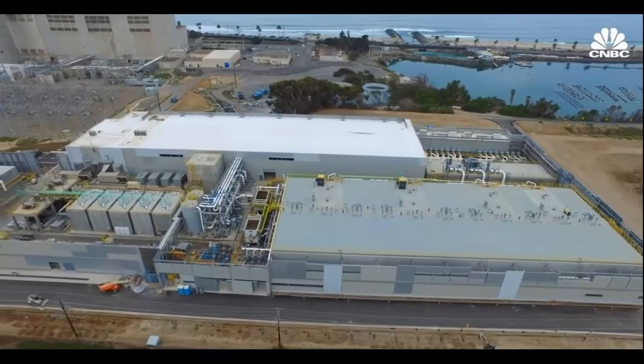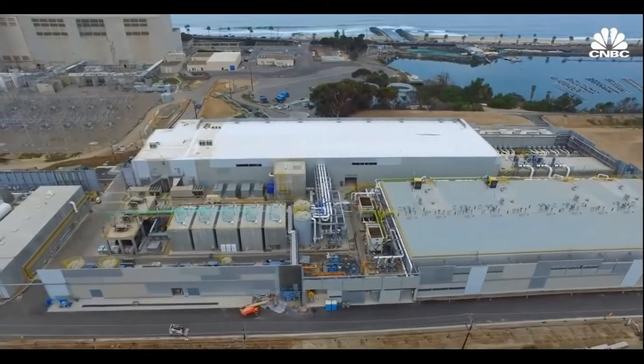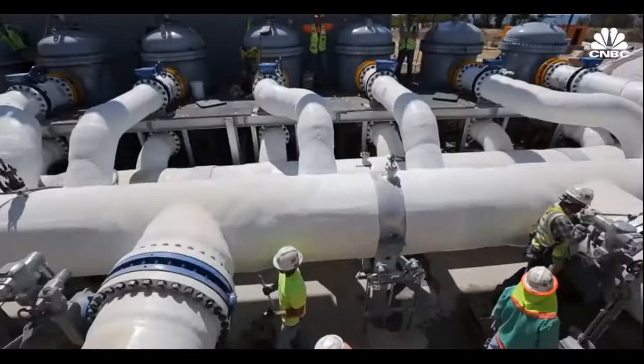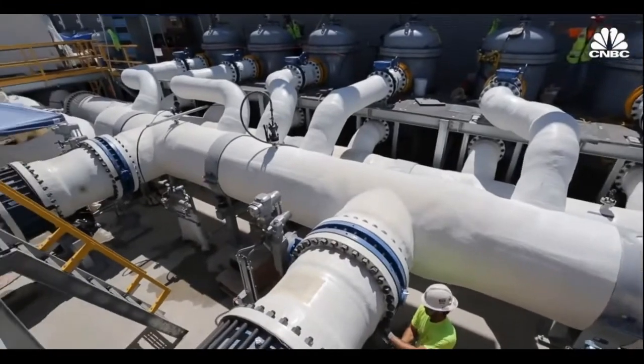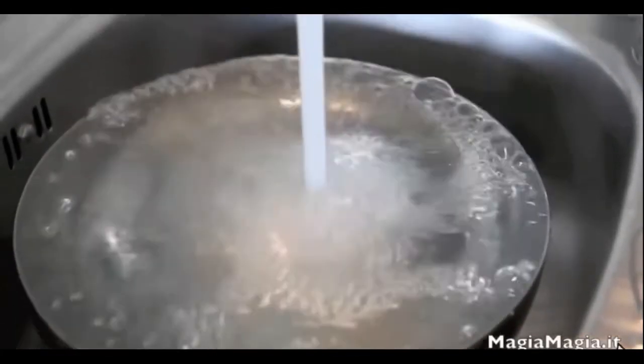In 2015, the Carlsbad Desalination Plant opened in San Diego, California. The Carlsbad plant uses reverse osmosis and is the largest desalination plant in the United States, capable of producing up to 50 million gallons of fresh water per day.